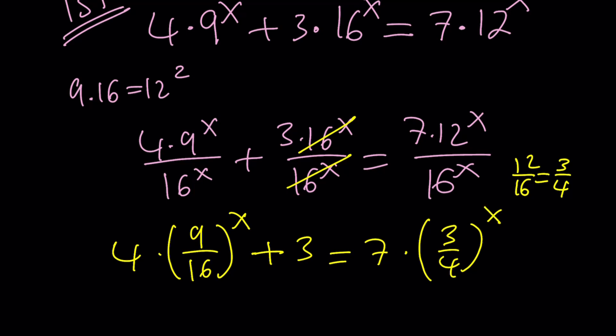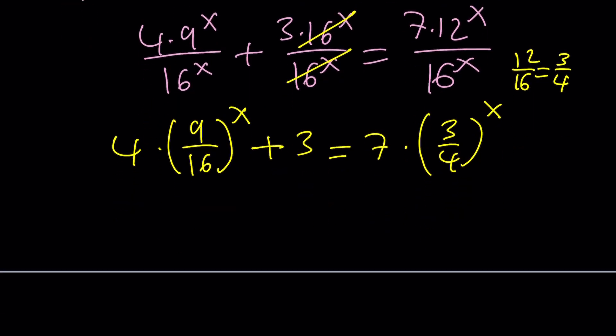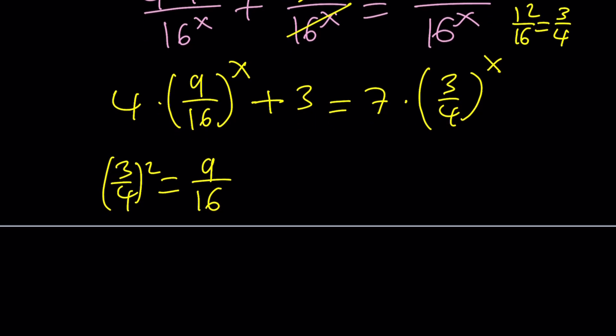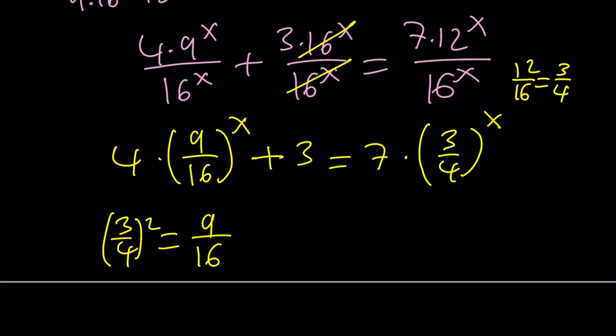Now, this expression is significant because 3 fourths squared is 9 sixteenths. By the way, it's the same thing as saying 9 times 16 is 12 squared, because if you think about it, hopefully you're going to realize what that looks like. Okay? Great. So now, where do we get from here? We're going to go ahead and use substitution. Let's go ahead and replace this with something. How about t?